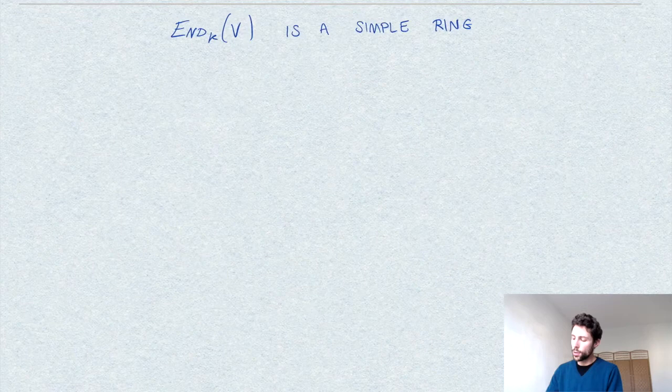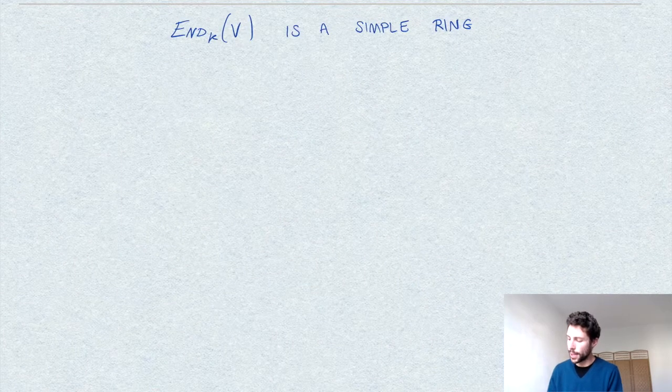Now this is not true in the non-commutative case, and a nice counterexample to keep in mind is the ring of endomorphisms of a vector space — the endomorphism ring — at least when the vector space is finite dimensional. Let's see the precise statement and notation here.